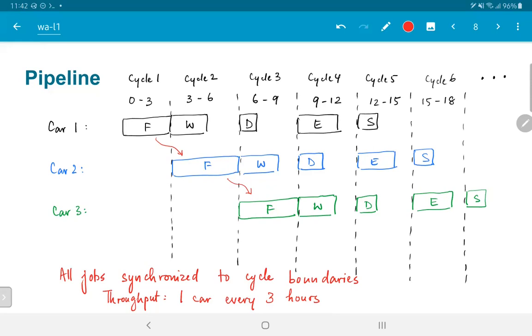On the other hand, you will find that the throughput in this case is exactly the same as it was in the assembly line case, which is that the bottleneck over here is set by the frame assembly, which takes three hours. And therefore, once every cycle or once every three hours, we will produce a car. In the steady state operation, we will actually find that once every cycle, one car gets produced. In other words, there is one car being generated out of the assembly line every three hours.